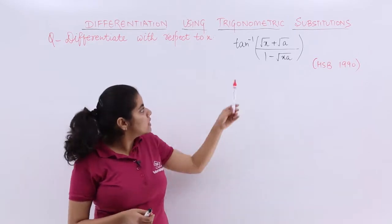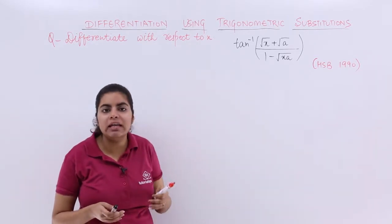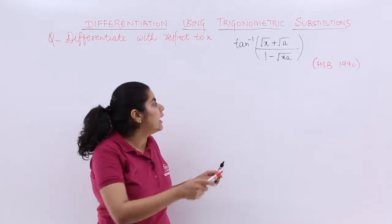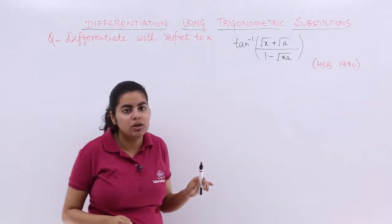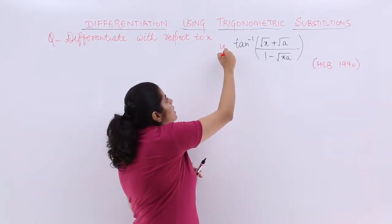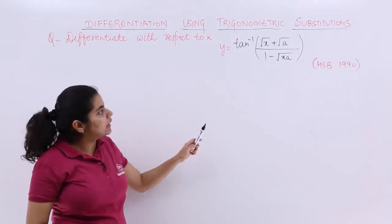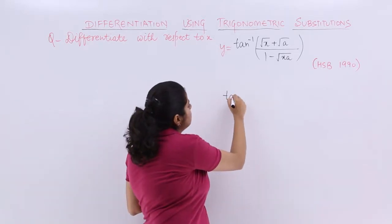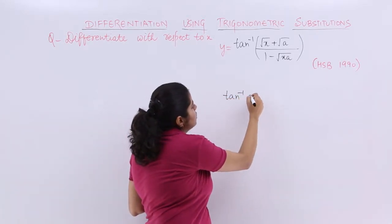On observation, it involves inverse trigonometric functions, specifically tan inverse. First, let's write this question as y for our convenience. Now see it and let me know what formula comes to your mind when you see something of this sort.